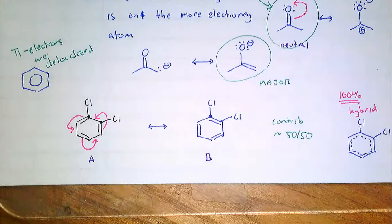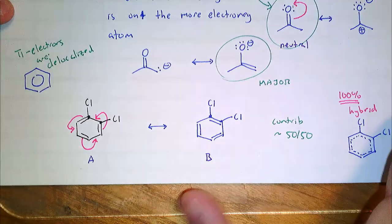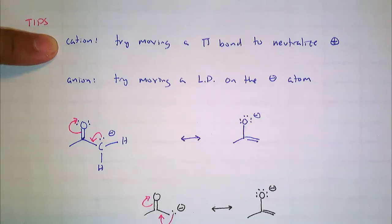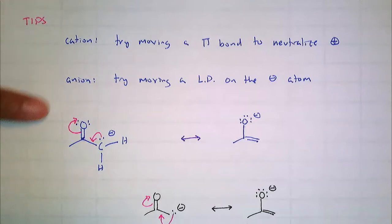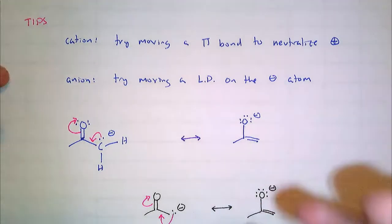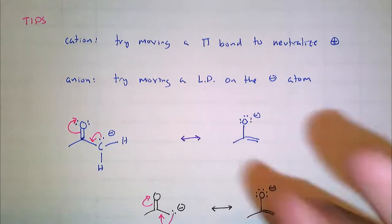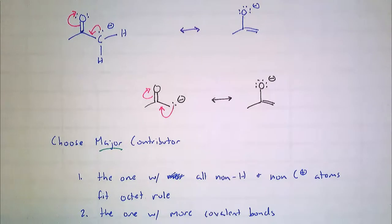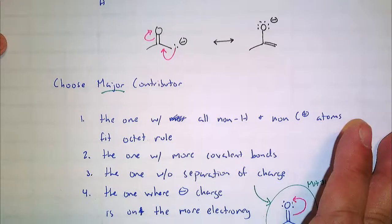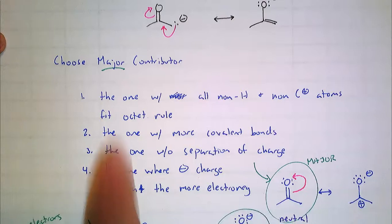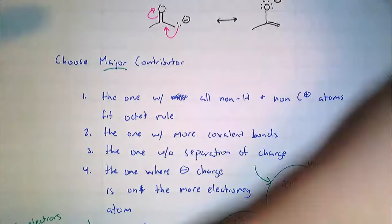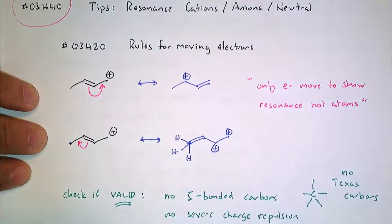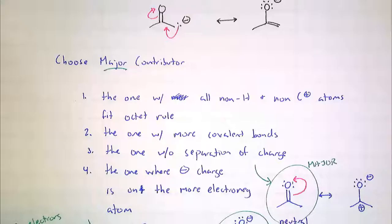There are many more examples — this is not going to be automatic until you do many, many examples. Not only do we want to practice with cations, anions, and neutral molecules, but we also haven't done any examples with nitrogen, or where oxygen becomes positively charged. Check your textbook and your practice problems. The first rule is: do you know how to draw electrons to show resonance? And the second set of rules is how to choose a major contributor.